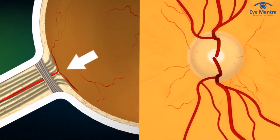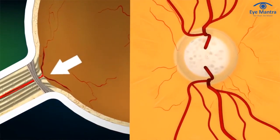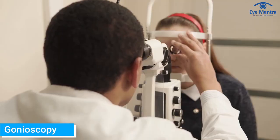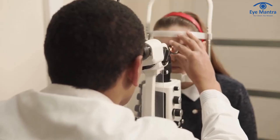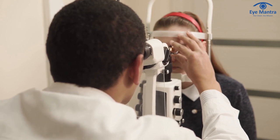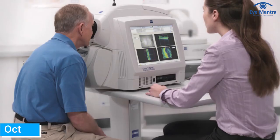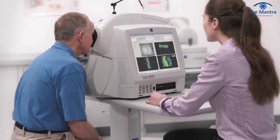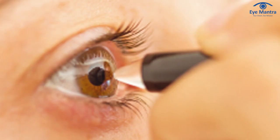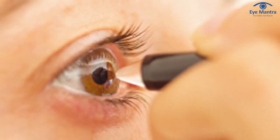High eye pressure significantly increases your risk of damage to the optic nerve, causing glaucoma and permanent visual loss. If you have ocular hypertension, your eye doctor may recommend a few tests to determine if it has led to glaucoma, and if so, how much optic nerve damage has been caused. These tests include: gonioscopy to determine the cause of OHT, a visual field test to determine your field of vision, OCT of the optic nerve to determine how much damage has been caused, and pachymetry to calculate corneal thickness.